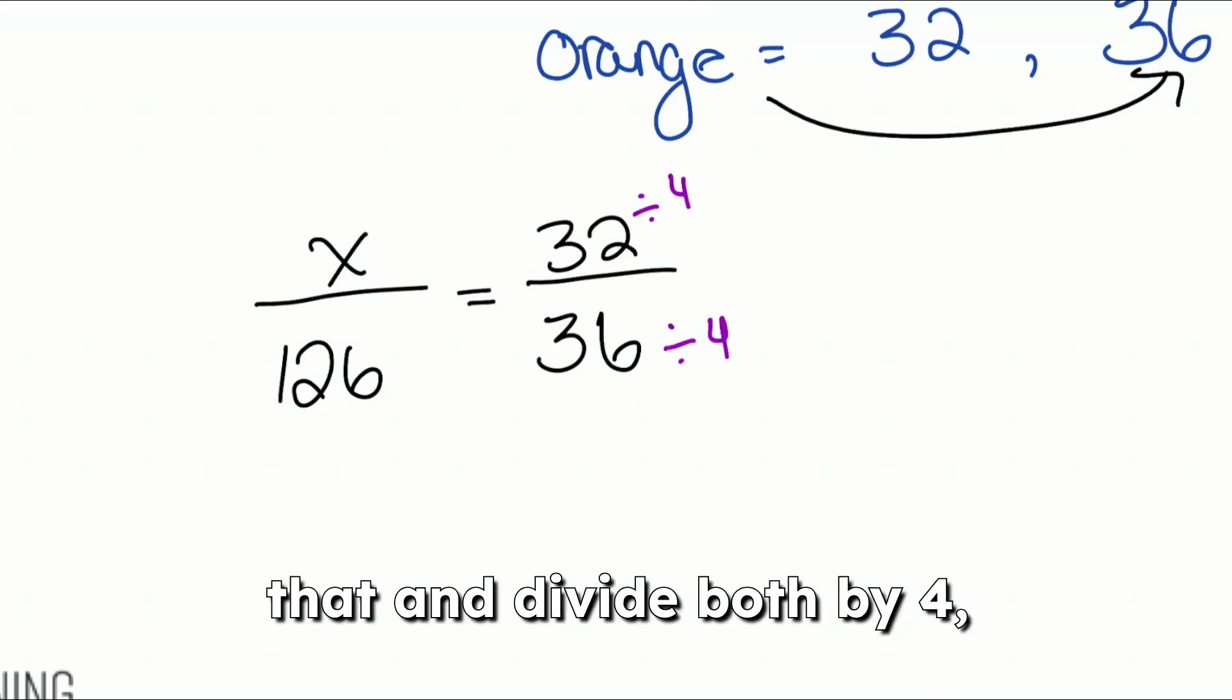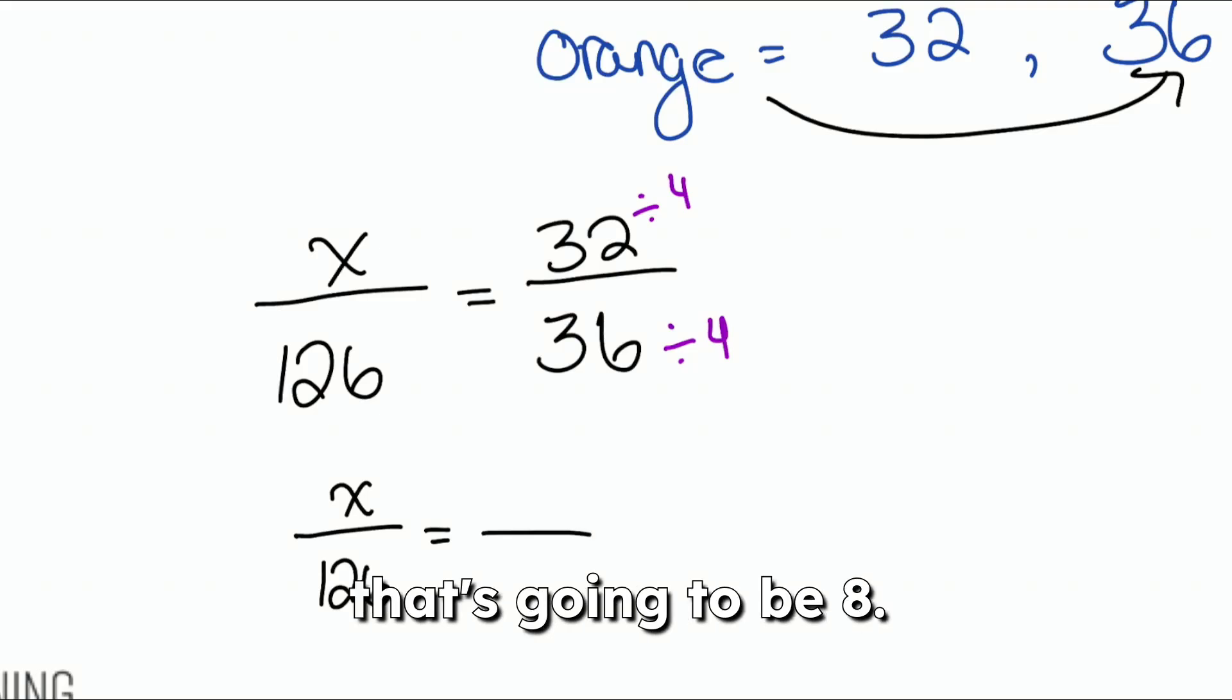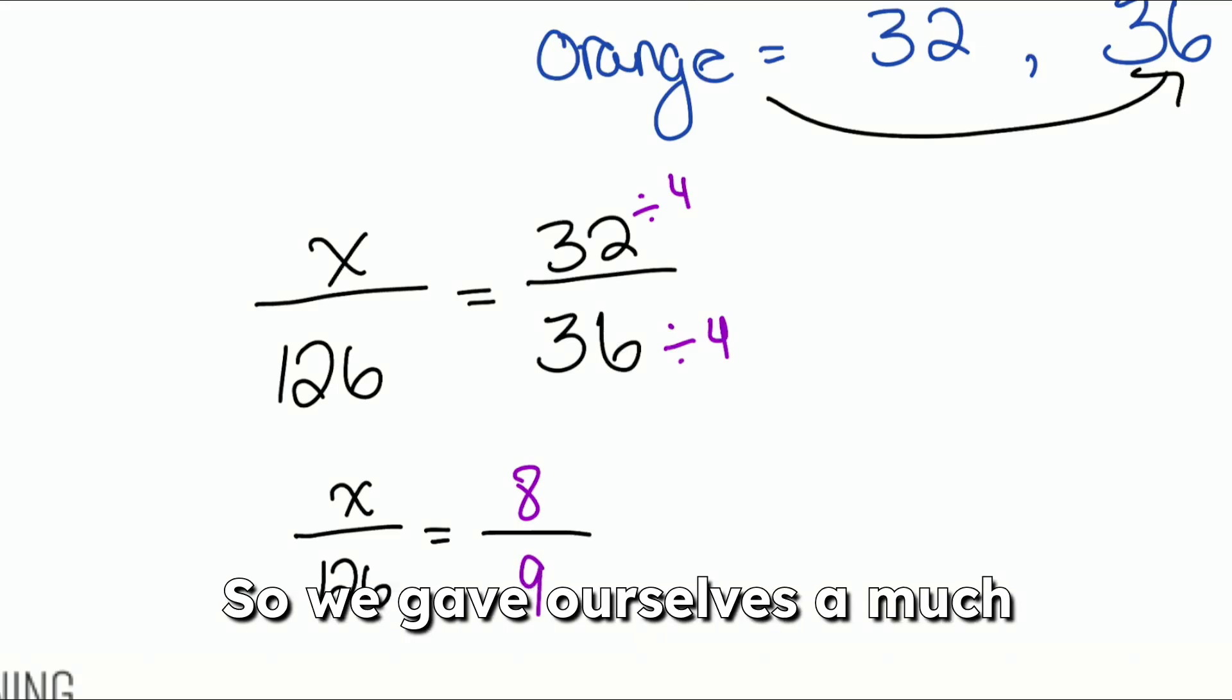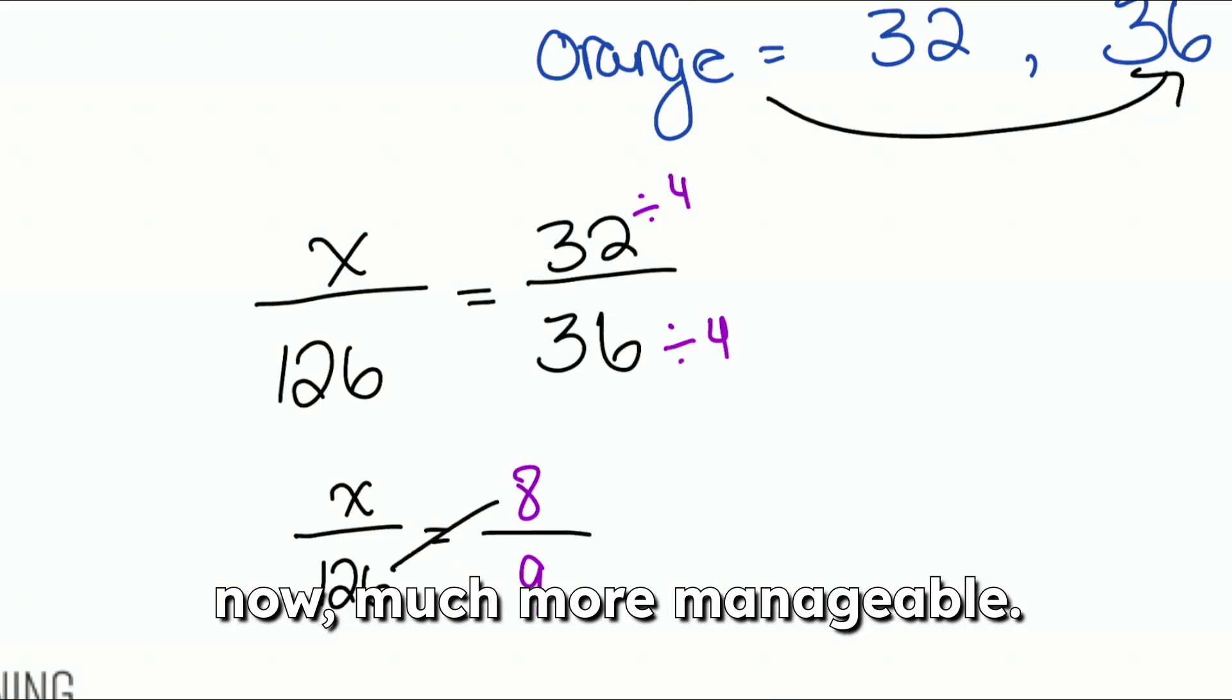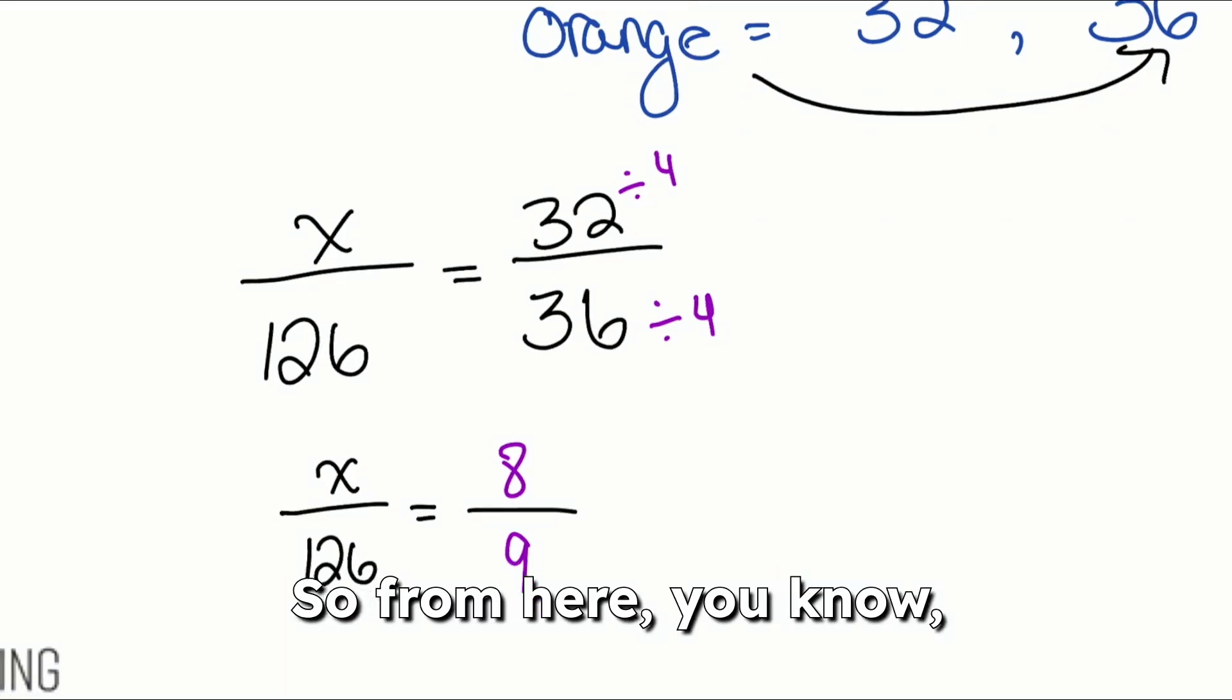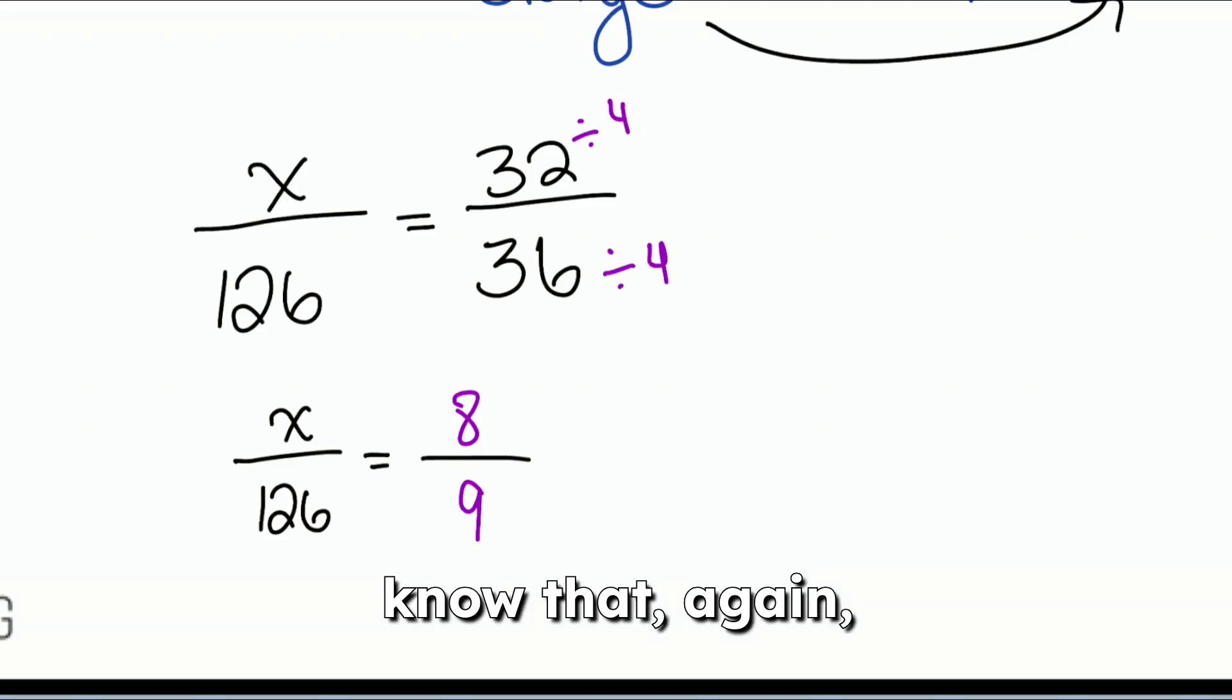But once we go ahead and do that and divide both by four, we'll get X over 126 still on the left. And then 32 divided by four on the right side, that's going to be eight. And in the denominator, 36 divided by four will be nine. So we gave ourselves a much better position here, because if we cross multiply now, much more manageable. I think we can agree with that. So from here, if we wanted to use some mental math, we could. Nine does go into 126. I believe that's going to be an exact 14 times. But if you didn't know that, cross multiplying and dividing is the way to go.